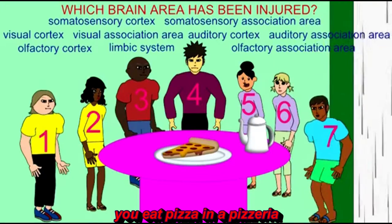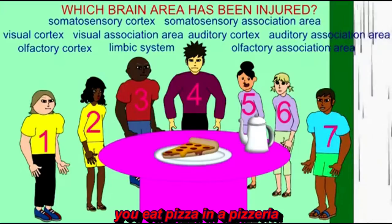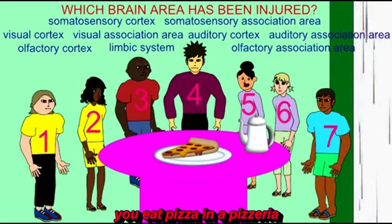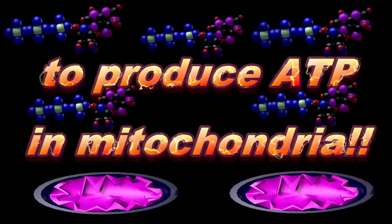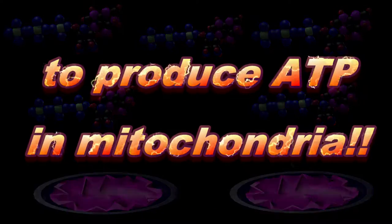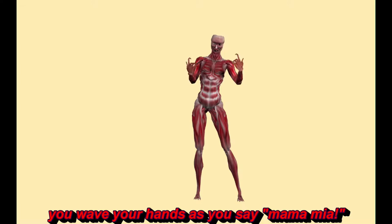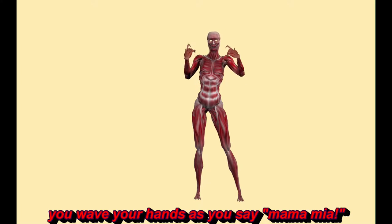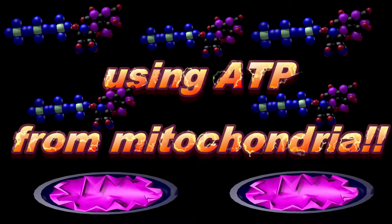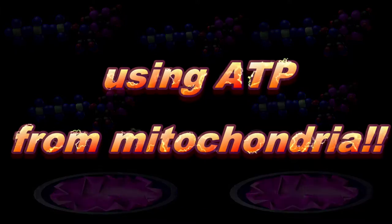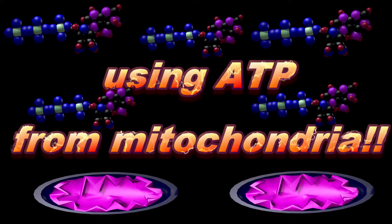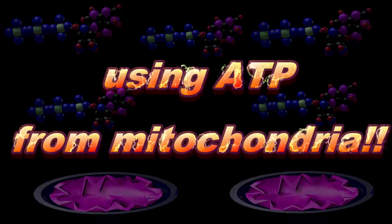You eat pizza in a pizzeria — you use ATP in mitochondria. You wave your hands as you say 'mamma mia!' You're using ATP from mitochondria. Your intestines absorb water, preventing diarrhea — you're using ATP from mitochondria.